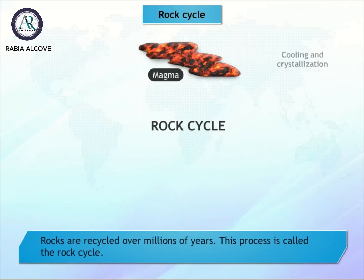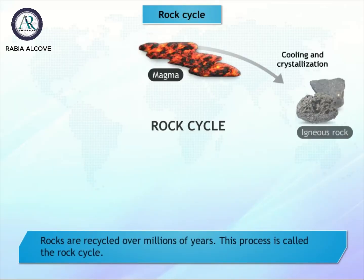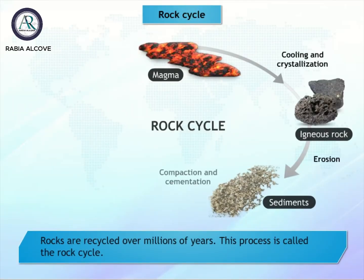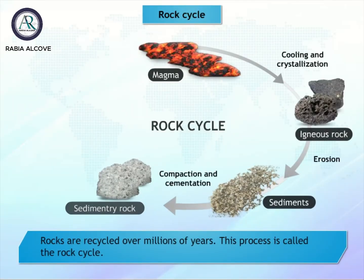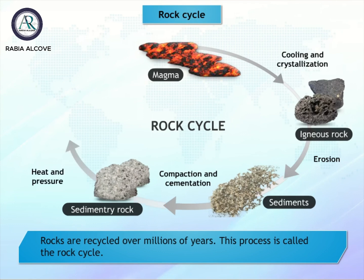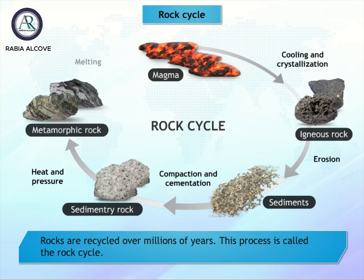Rock cycle. The transformation of one type of rock to another is brought about by different weather factors like rain, wind, ice, and temperature, and by intense pressure. This transformation makes up the rock cycle.